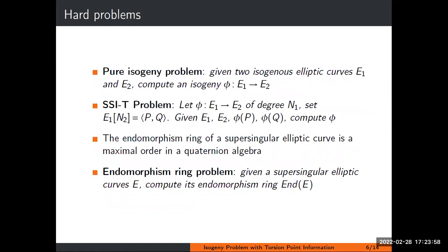Now let me recall some hard problems in isogeny-based crypto. We have the pure isogeny problem: given two curves, compute an isogeny between them. Then there's the SSIT problem where not only are the two curves given, but also a degree is specified, and you know the action of the secret isogeny on some torsion. Finally, there's the endomorphism ring problem: given a supersingular curve, find its endomorphism ring.